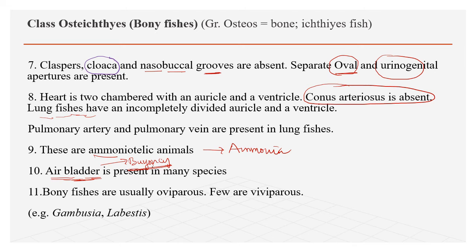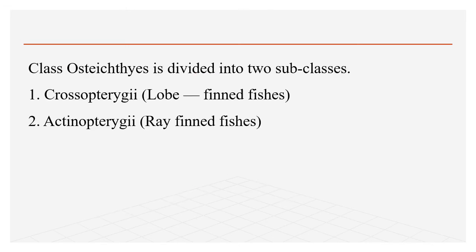Bony fishes are usually oviparous. Examples of Osteichthyes include Gambusia, Lebistes, Labeo rohita, Catla catla, and Hippocampus. This class Osteichthyes is again divided into two subclasses: Sarcopterygii and Actinopterygii. Sarcopterygii means lobe-finned fishes and Actinopterygii means ray-finned fishes.